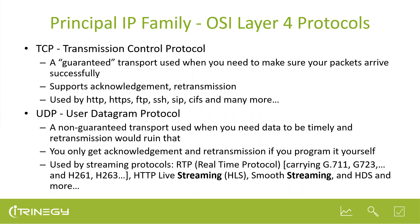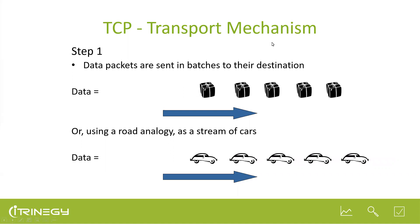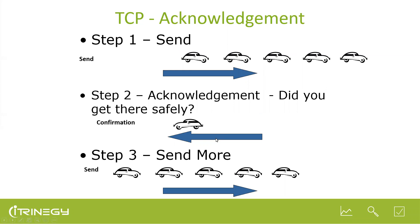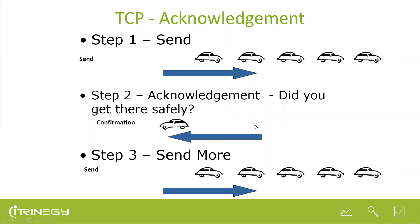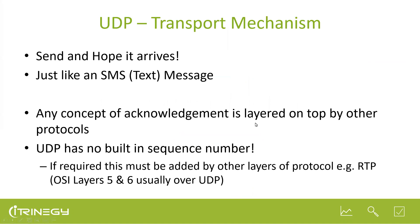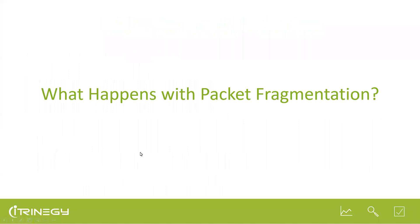In the TCP transport mechanism, we can only send a certain number of segments before needing an acknowledgement from the other end. UDP is a send-it-and-hope mechanism — like sending an SMS where you only know it arrived if the other side responds. UDP also has no built-in sequence number, so if something goes missing, you won't know unless you program your own sequence number at a higher layer. For this reason, people often use RTP on top of UDP for real-time protocols, as RTP does have a sequence number.